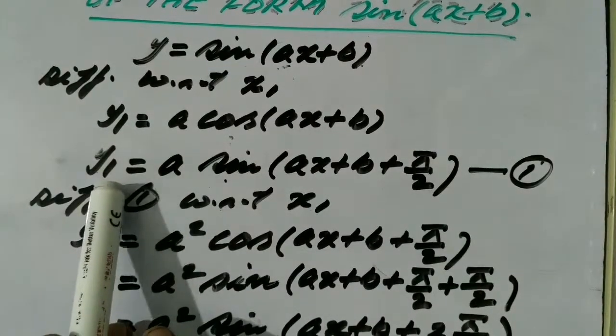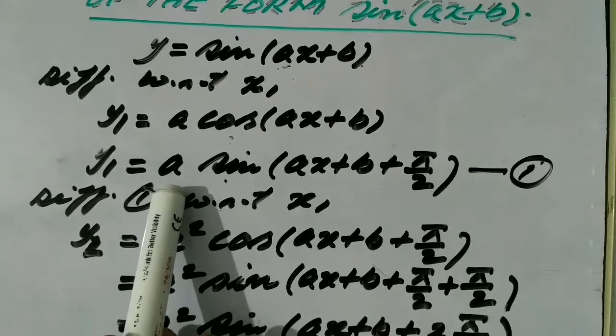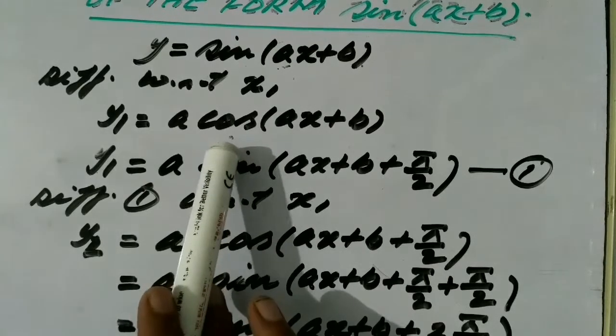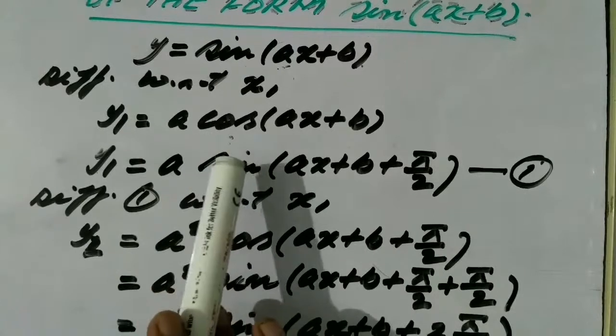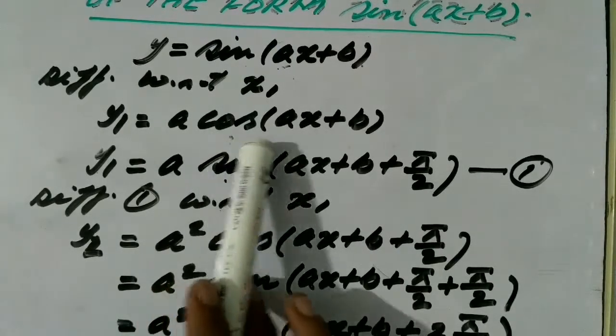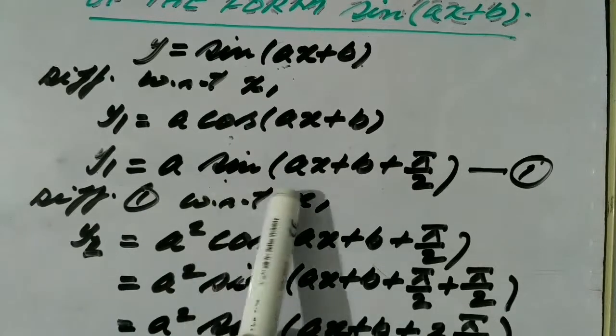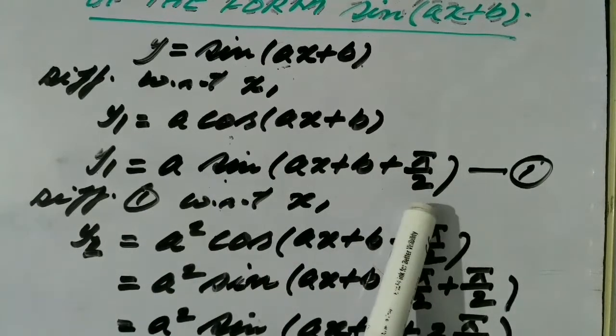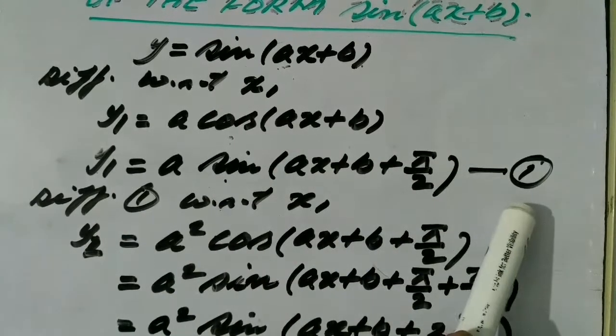Now, y1 may be written as a, and since cos θ may be written as sin(90+θ), we may write cos(ax+b) as sin(ax+b+π/2). Let it be equation number 1.